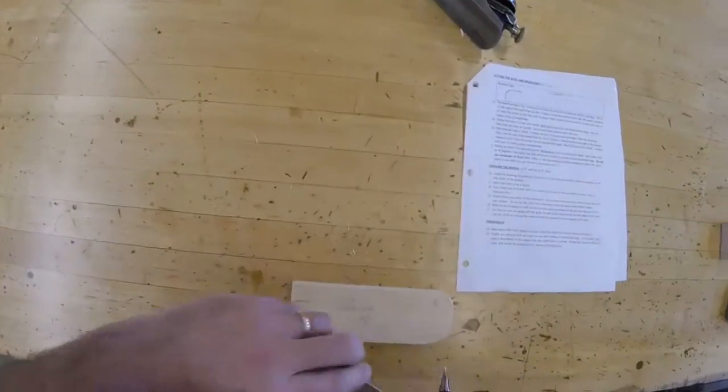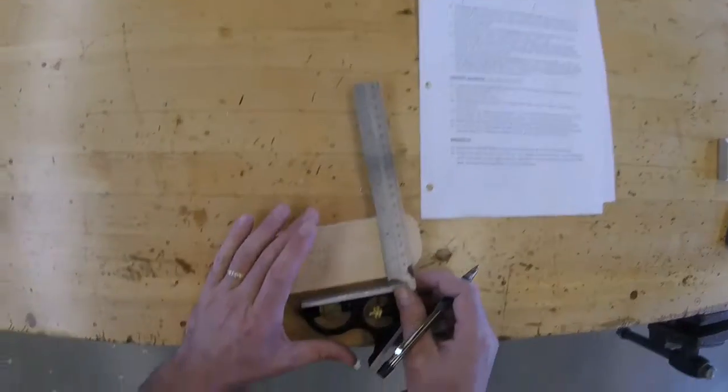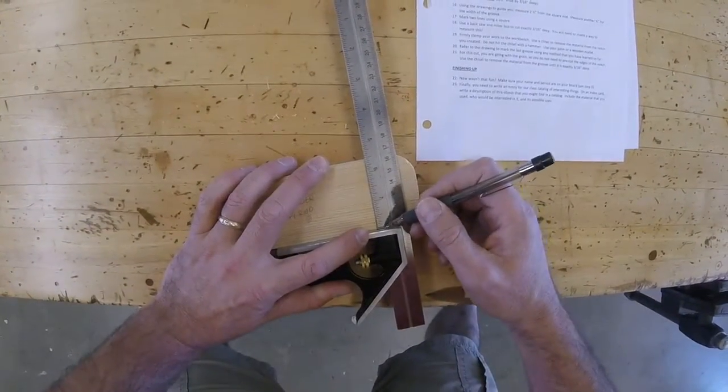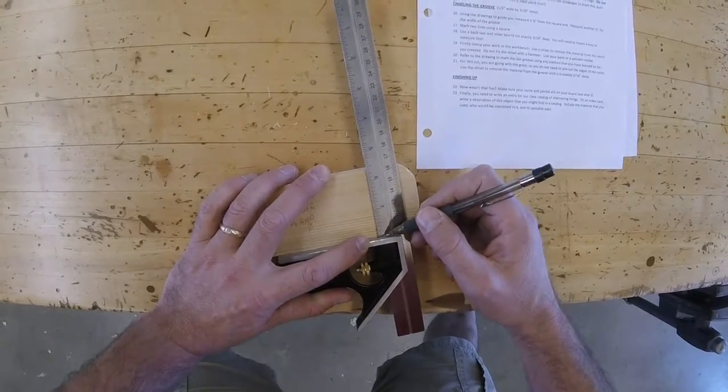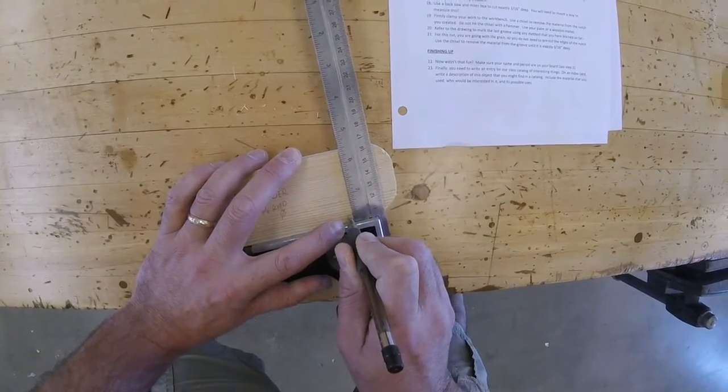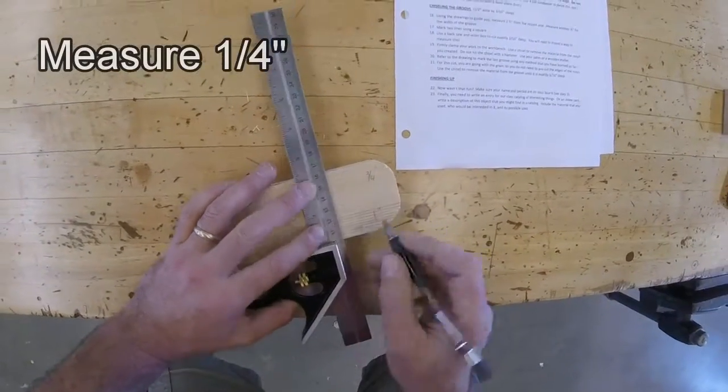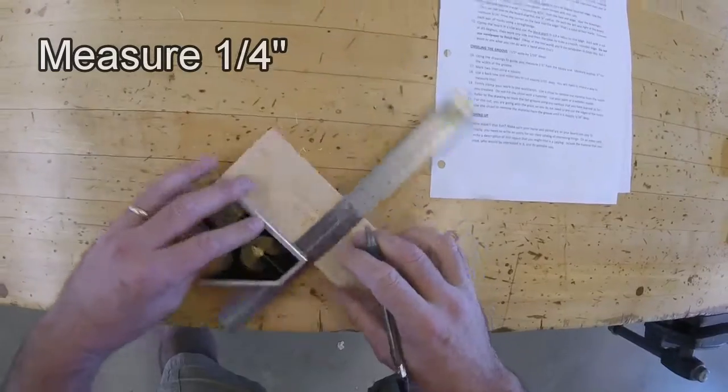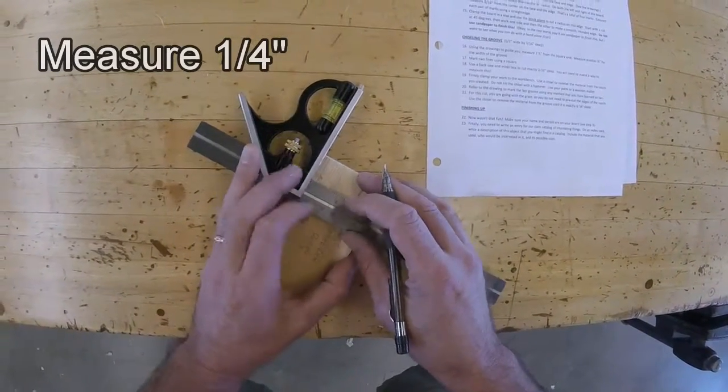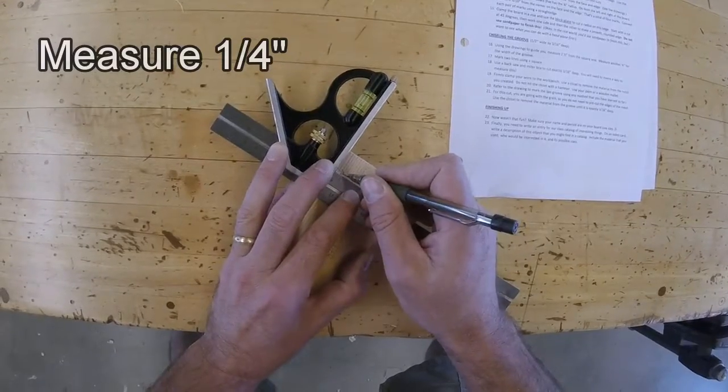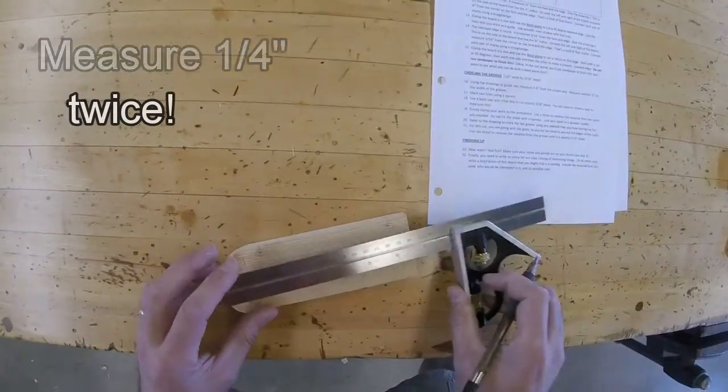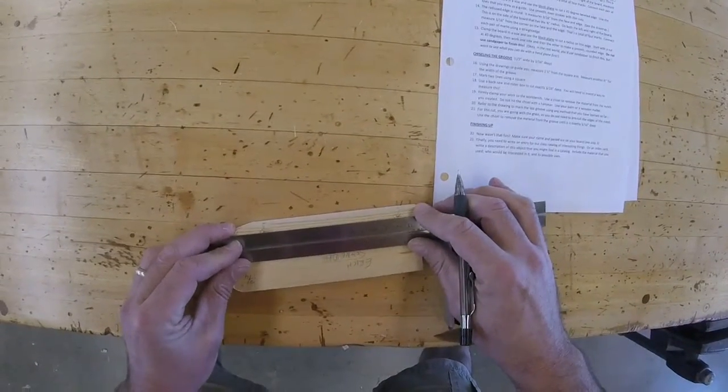This time I'm going to use my combination square to make those measurements. I'm going to put that right up against the edge. Notice I have my combination square set so that it's right at the edge of an inch mark. Then I can look down at this, and I can make a measure at a quarter of an inch. Put a circle around that. And we'll do the same thing on this side. A quarter of an inch.